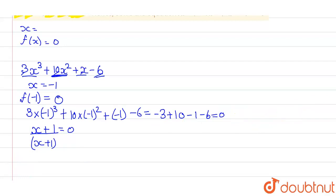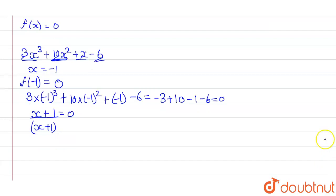Now, what you can do, you can apply long division method to find the remainder part or the other factors of it. So, here we can see the expression is 3x cube plus 10x square plus x minus 6. One of its factor is x plus 1. So, divide it with x plus 1.